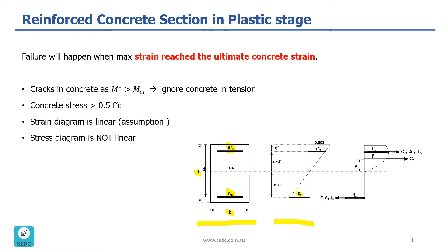Epsilon s is the strain of the steel in tension. Epsilon prime s is the strain of the steel in compression, and the ultimate concrete strain is 0.003. Here you can see the stress diagram. As you can see, the distribution of stress in concrete is not linear.